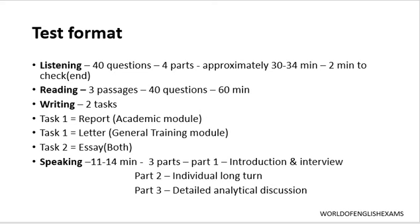Regardless of whether you are going for the academic test or the general training test, these four parts — listening, reading, writing, and speaking — remain unchanged. You need to attempt all four sections and score well in all of them so that your aggregate score on the Test Report Form is high. Your overall score is given in the range of band 0 to 9, with band 9 being the maximum. There is no pass or fail in the test — it just depends on the required score.